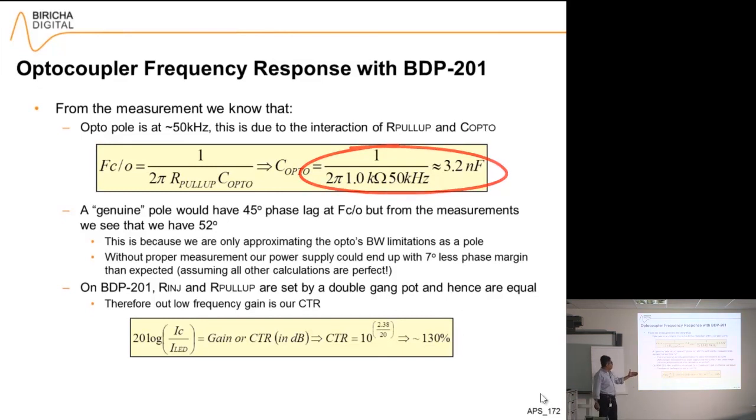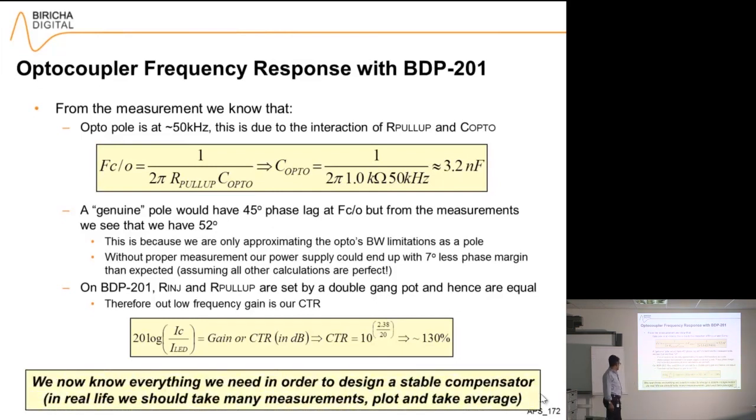A genuine pole would have given me 45 degrees of phase lag, but I have lost 52, which means that I have lost an extra seven degrees of phase margin. Now that I know, I can take it into account. And finally, to get the CTR, you simply use this equation and you end up with 130%. We now know everything in order to design a stable compensator.